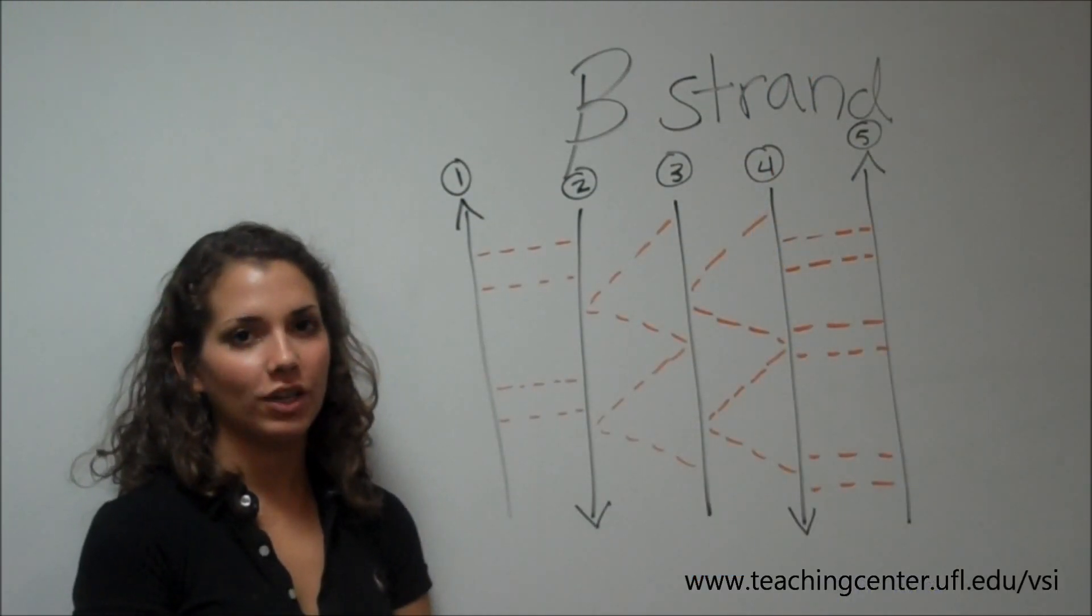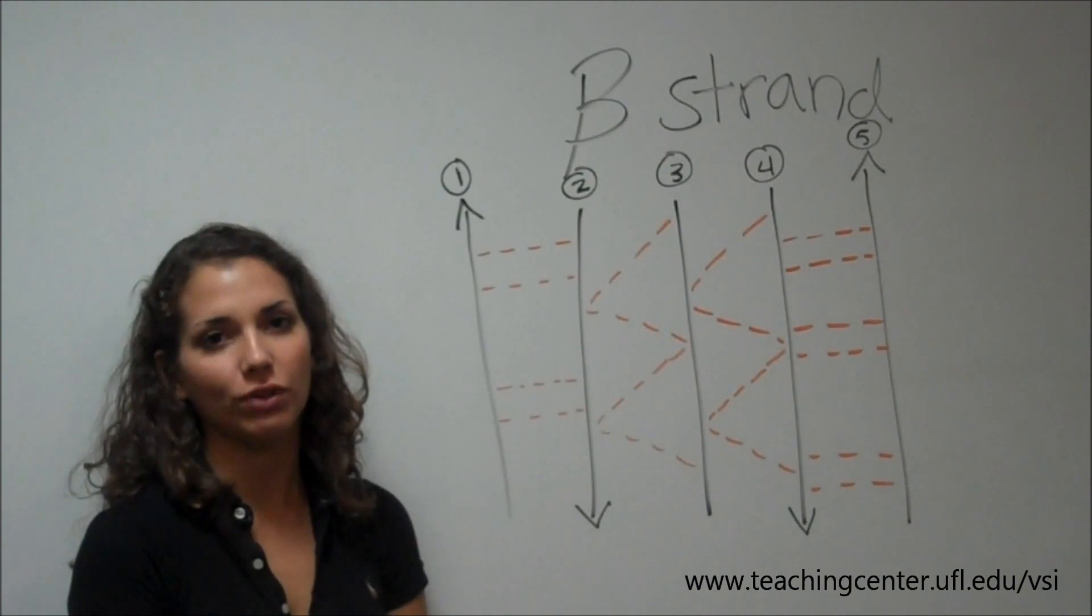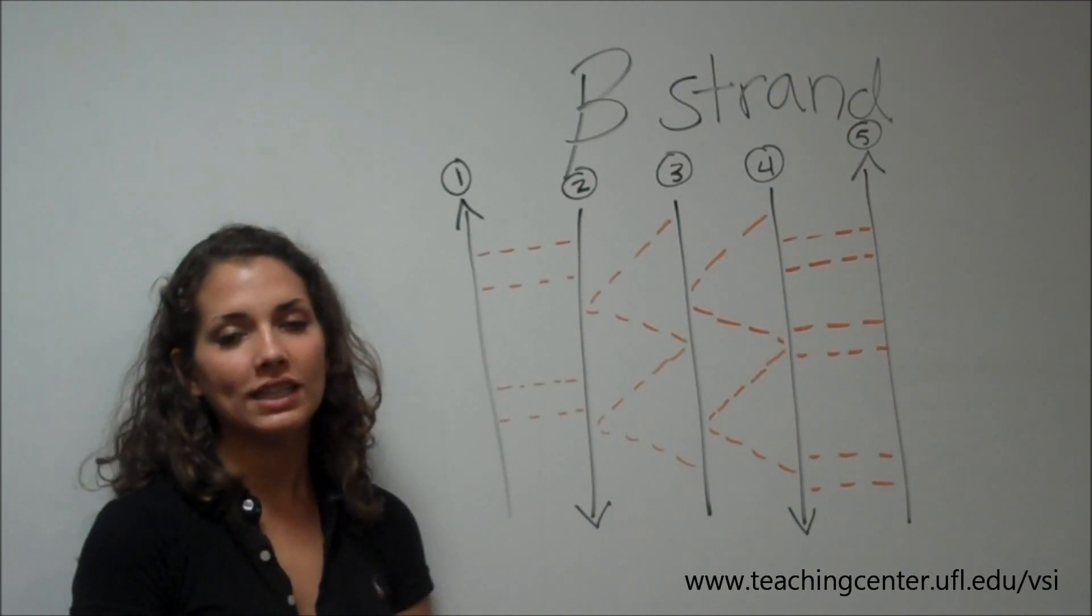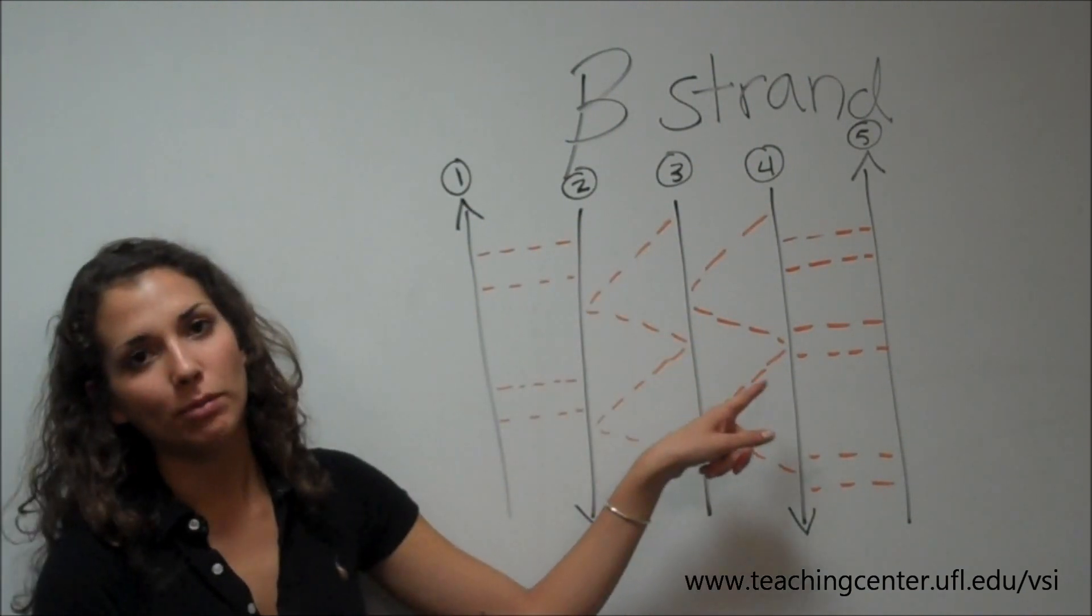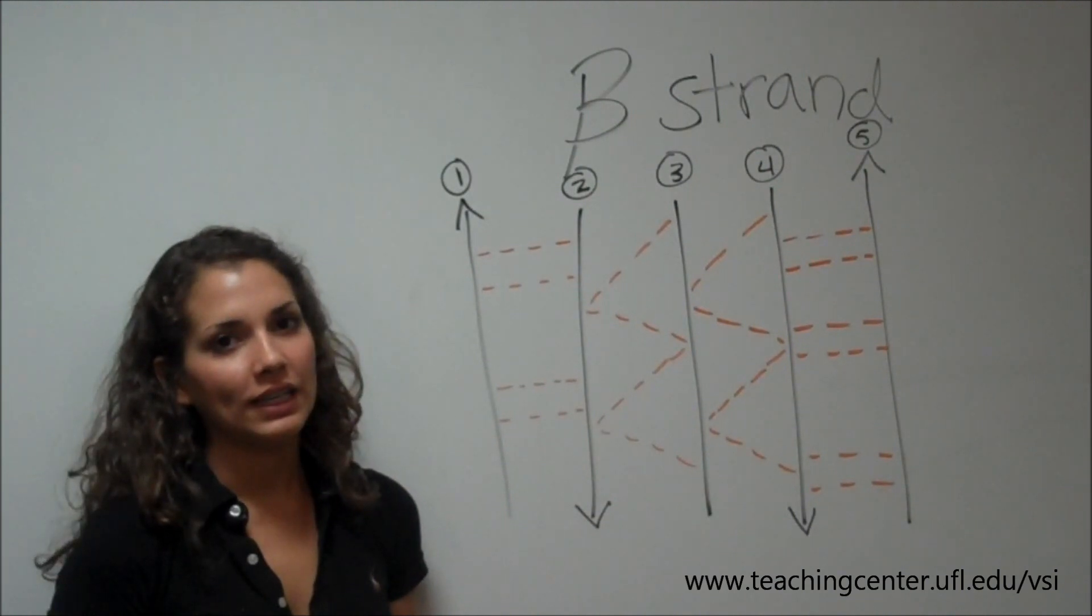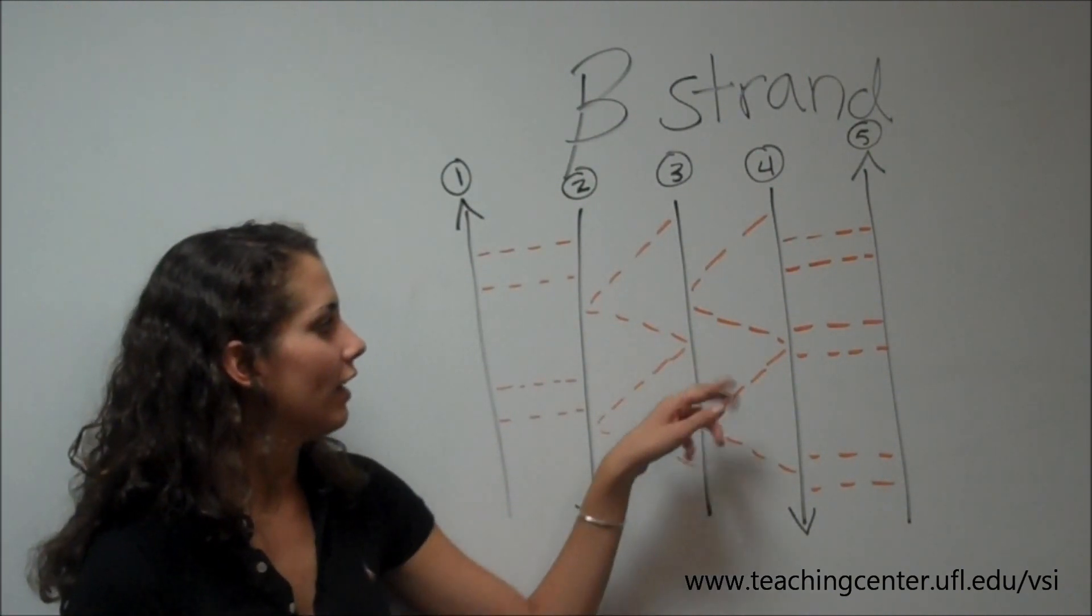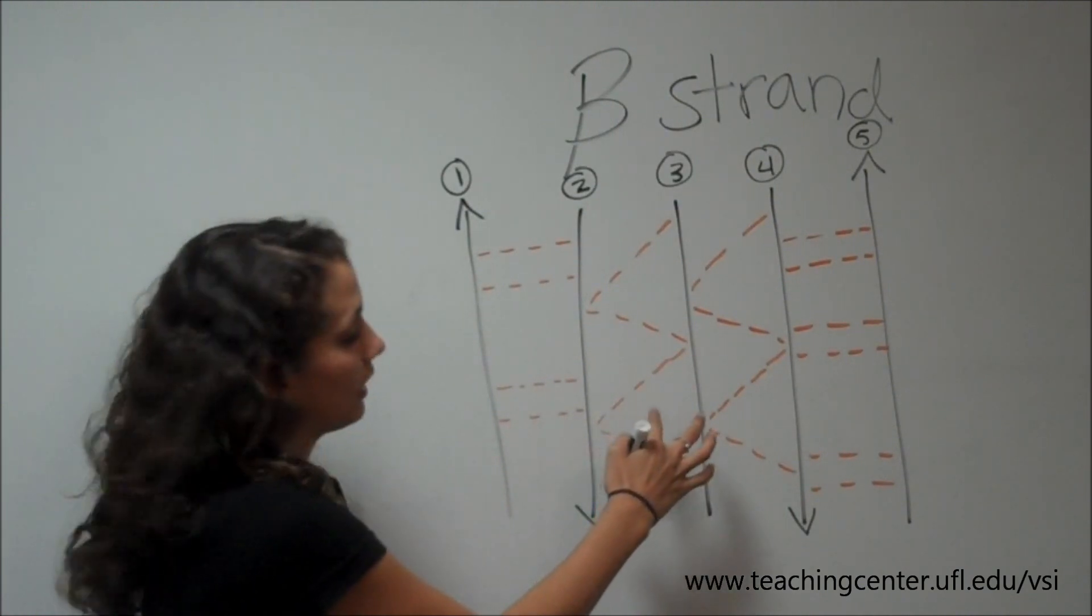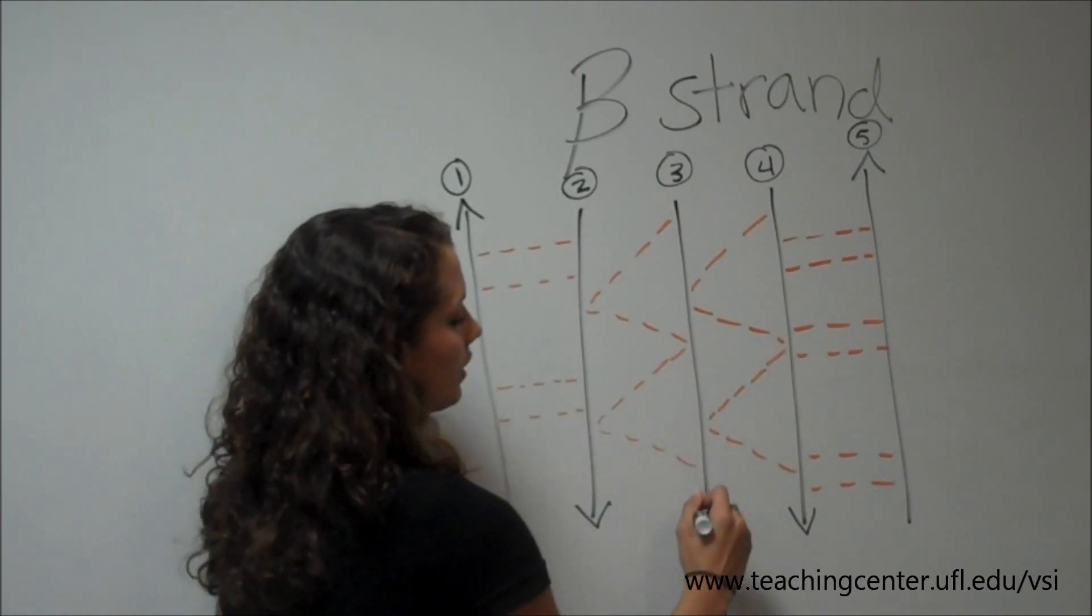There are also mixed beta sheets, where certain strands run parallel and others run anti-parallel. Now, on an exam, you should be able to answer a question where it lists or numbers the strands, and then it'll say which way is strand number 3 going. So you should know by looking at this that 3 is parallel to strand number 4 and strand number 2, so it is going the same way.